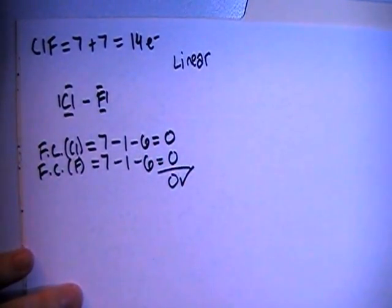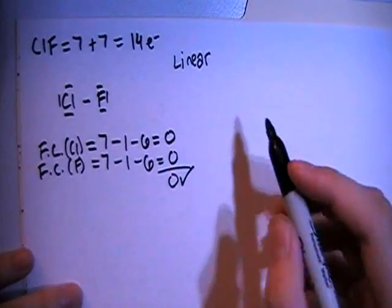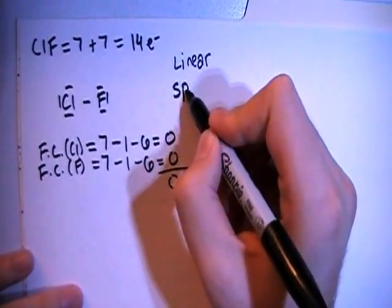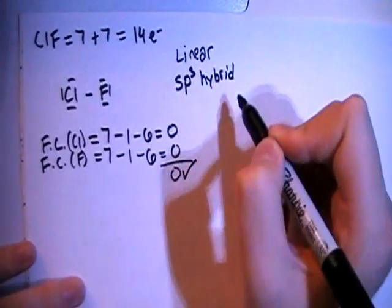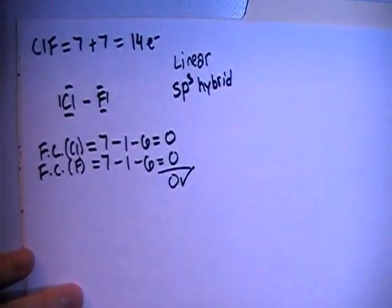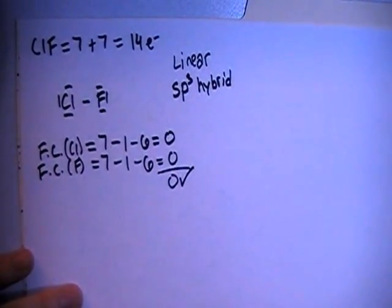So they're both going to have 4 electron groups which means we need 4 hybrid orbitals. So we're going to go with sp3 hybridization - that's 1 s and 3 p orbitals for a total of 4 hybrid orbitals.